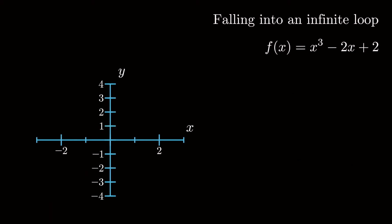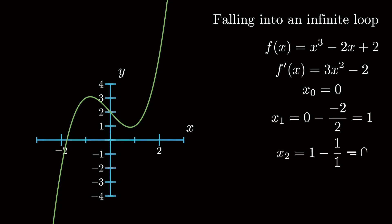Now let's consider the function x cubed minus 2x plus 2. If we start with zero as the initial guess, then the next update we would get is one. And the next update we get is zero. And the next would be one again. You can see what's happening here. If zero is set as the starting value, then the algorithm will keep moving between zero and one forever and it would never yield a solution to the function.